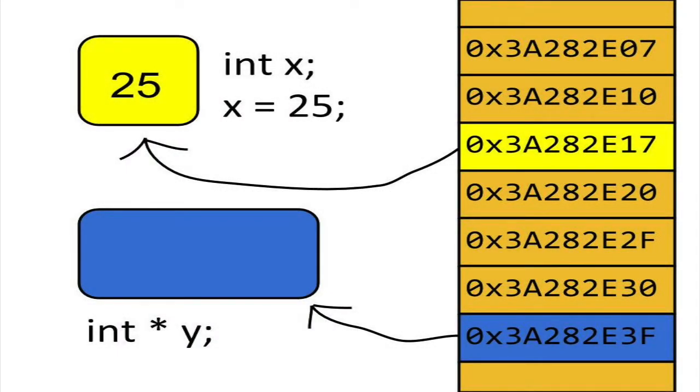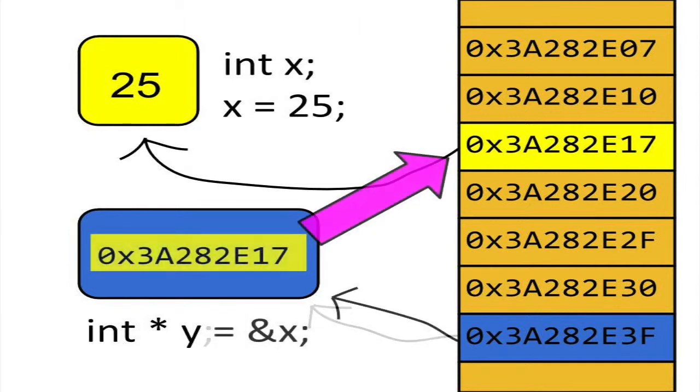Now we can use y to access int variables indirectly. Let's assign the pointer y to the int variable x. The ampersand symbol, or reference operator, gives us the address of the variable x.